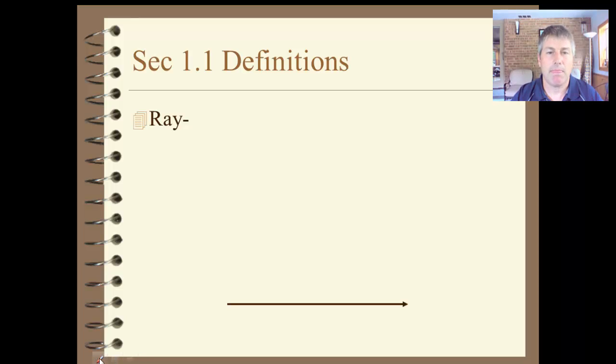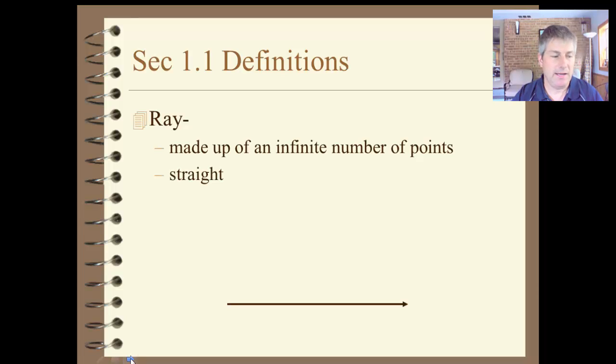A ray. A ray is made up of an infinite number of points, just like the line and the segment. It is also straight, like the line and the segment. But it extends infinitely in one direction, denoted by the arrow here on the end of the segment. So it starts here at one end and extends infinitely in the other direction.